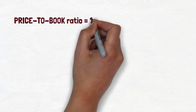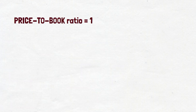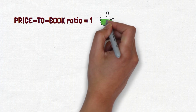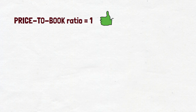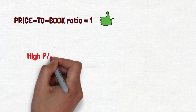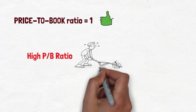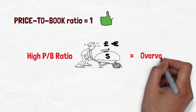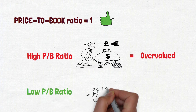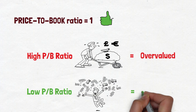A price-to-book ratio of one means that the stock price is trading in line with the book value of the company. In other words, the stock price would be considered fairly valued. A company with a high price-to-book ratio could mean the stock price is overvalued, while a company with a lower price-to-book could be undervalued.